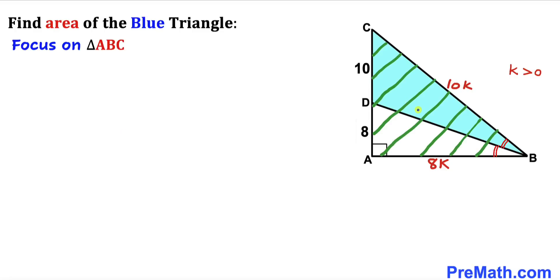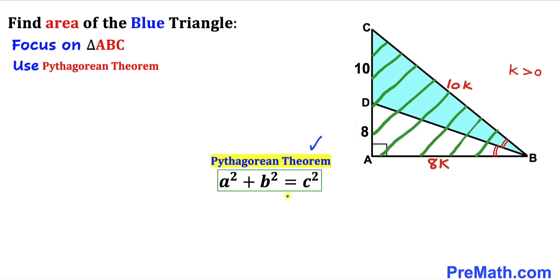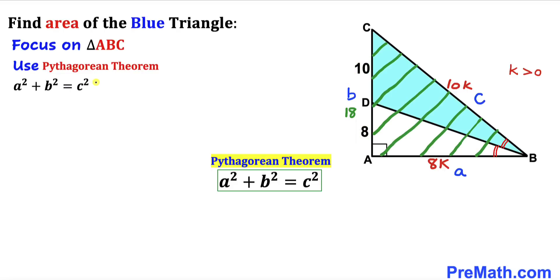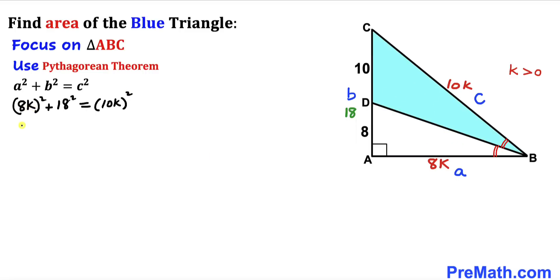Now let's focus on this right triangle ABC and use the Pythagorean theorem. The formula is A squared plus B squared equals C squared. I'll call the longest leg side C, this side A, and this side lowercase B. Keep in mind that side B is the sum of the individual lengths: 10 plus 8 equals 18. Filling in the Pythagorean formula: A is 8K squared, B is 18 whole squared, equal to C which is 10K whole squared. Simplifying: 64K squared plus 324 equals 100K squared.